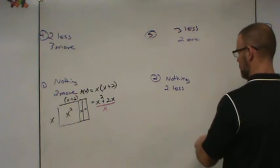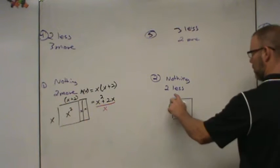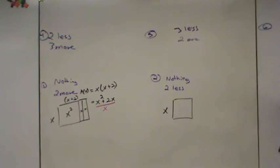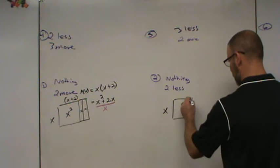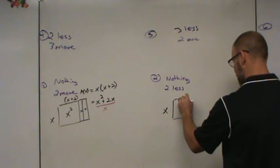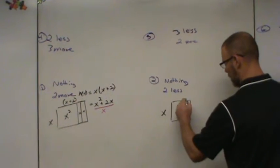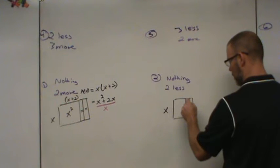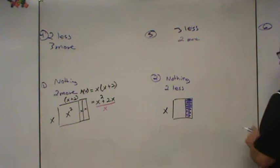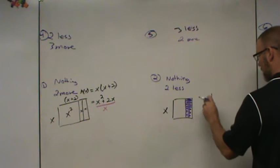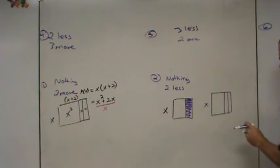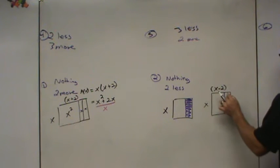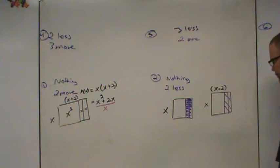The second equation it talks about is I'm going to do nothing to one side, but I'm going to do two less to the other. So the first side, I'm going to do nothing. The second side, I'm going to do two less. Well, two less would indicate that I take away from the inside. Now the book would want us to shade everything, just kind of like this. That gets a bit complicated because we cannot actually see how many x's we have.